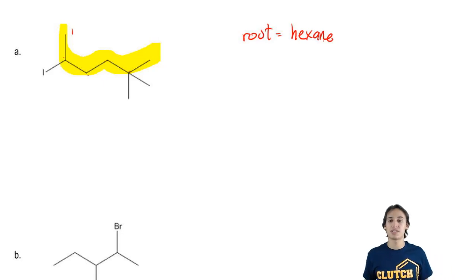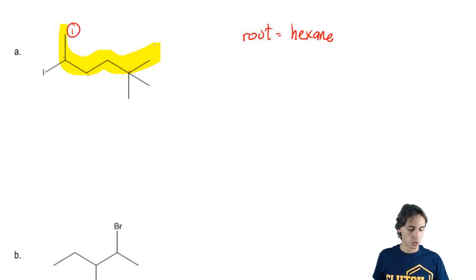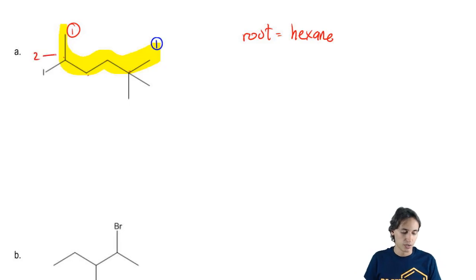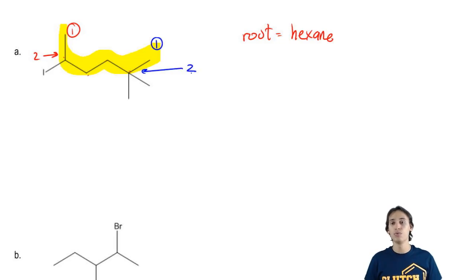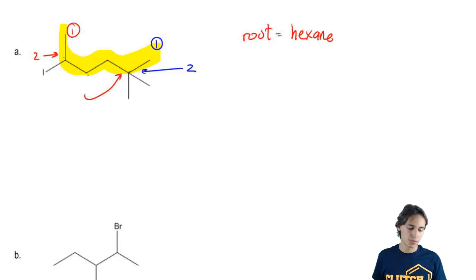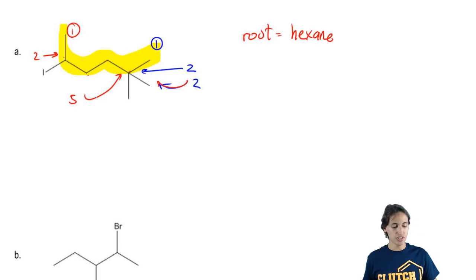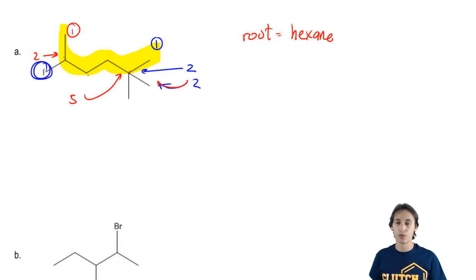Now I have to decide which end gets the number one — is it red or is it blue? I need to see which one has the closest substituent. Red has a substituent on two; blue has a substituent on two. So far there's a tie. Then I go to the next substituent: red has its next substituent on five, blue still has its next substituent on two because there were two methyls in that location. So even though the iodine is all the way over here, my number one is still going to be blue.